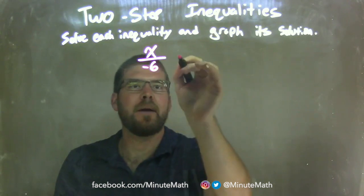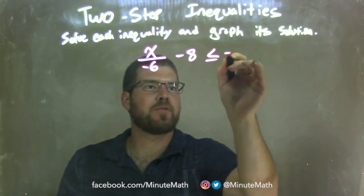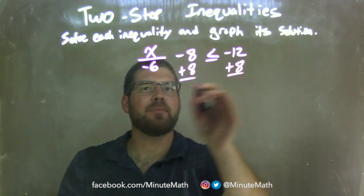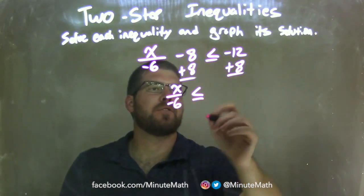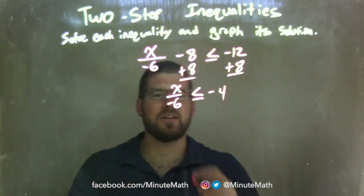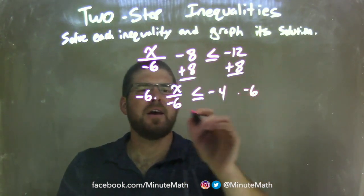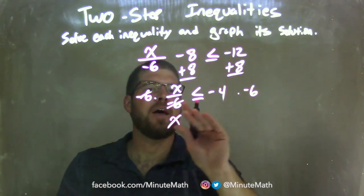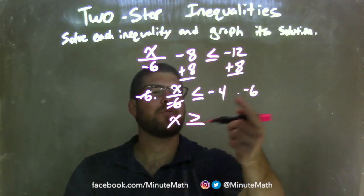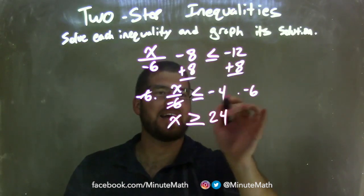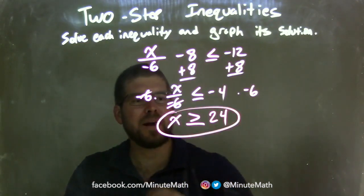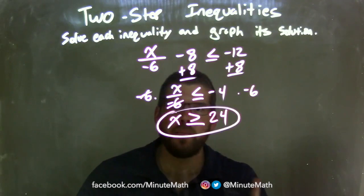x over negative 6, minus 8, is less than or equal to negative 12. First step: add 8 to both sides, leaving me with x over negative 6 is less than or equal to negative 12 plus 8, which is negative 4. Now I multiply both sides by negative 6 to eliminate that. Since I multiply by a negative over an inequality, I take the less than or equal to and flip it to greater than or equal to. Negative 4 times negative 6 is positive 24 — a negative times a negative is a positive. So x is greater than or equal to 24.